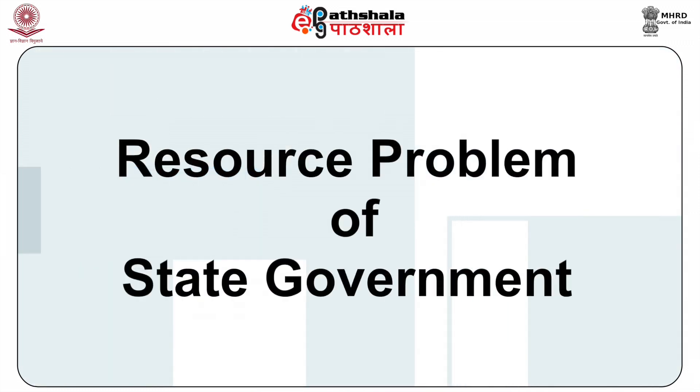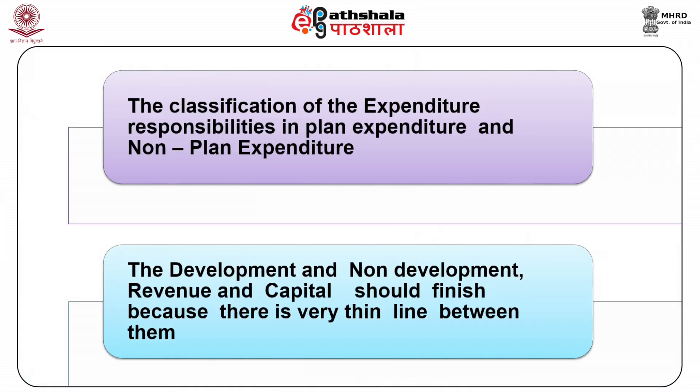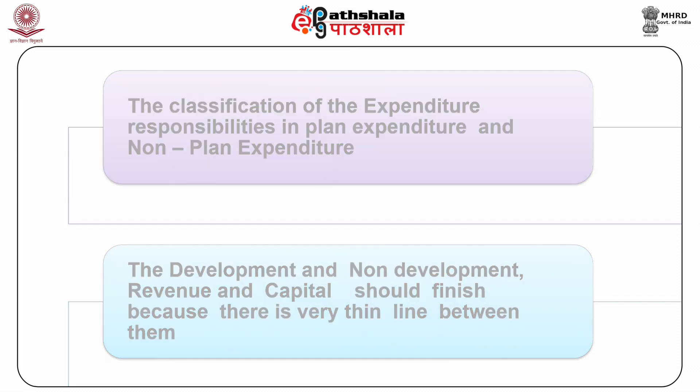Moving on to discuss about the resource problem of state government: the financial problem is a joint result of expenditure responsibilities and lack of resources. After explaining financial resources of the states, we now look at the expenditure side of problems. The classification of expenditure responsibilities includes plan and non-plan expenditure, development and non-development, and revenue and capital expenditure. Revenue expenditure includes salary, pension, and interest payment on liabilities.